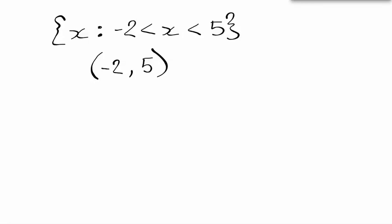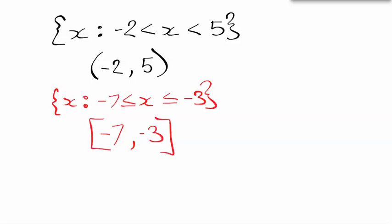If I have it the other way around, x where x is between -7 and -3, in this case, because I've got the equal sign in there, when I start at minus 7 is my lowest, minus 3 is my largest, I'm going to put square brackets on it.